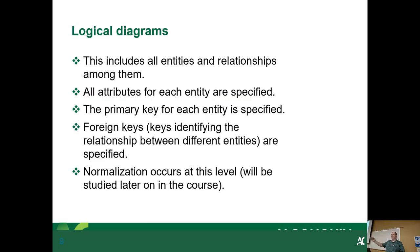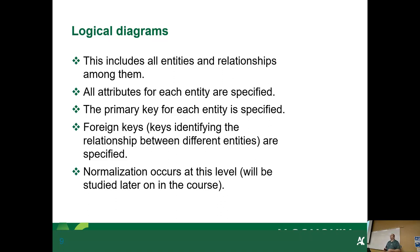A logical diagram includes all entities, relationships, and fully specified attributes. Primary keys and foreign keys exist. Normalization happens at this stage — we'll cover that in two weeks, and I guarantee it'll be the most painful lecture of the term. Some people get it and some don't. The physical diagram is the next step: it specifies all tables and columns, foreign keys exist, and you may do some denormalization if you've gone too far.